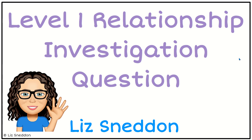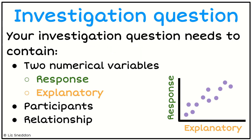Hi, it's Liz Sneddon. Let's have a look at writing investigation questions for a relationship investigation. So these are some of the different things we need to have in our question. We need to choose two numeric variables, one of which needs to be the response variable, and one which is the explanatory variable.